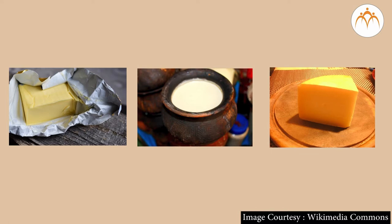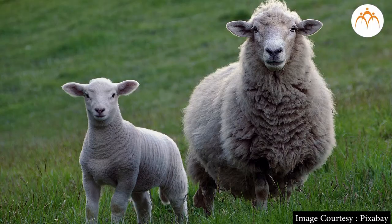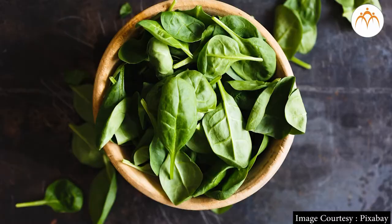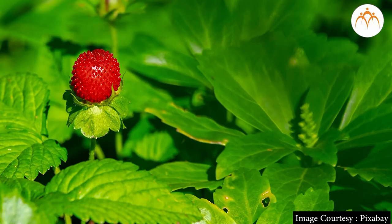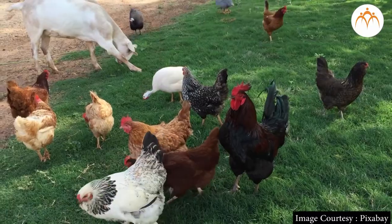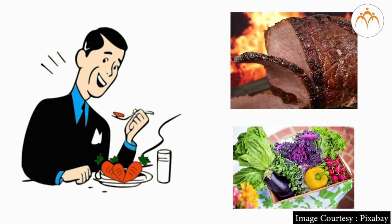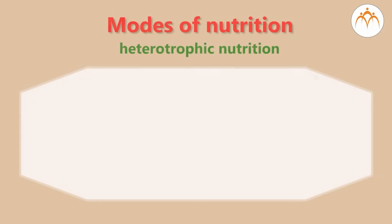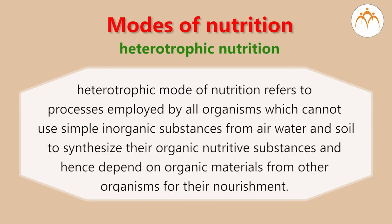Again, the answer is no. We obtain milk from animals like cows, buffaloes, sheep, goats etc. Fruits, vegetables, spices, herbs and oils we use are obtained from plants, while eggs and all meats are obtained from animals. This means that we too depend on other organisms for our nutrition and hence we are heterotrophic. In other words, heterotrophic mode of nutrition refers to processes employed by all organisms which cannot use simple inorganic substances from air, water and soil to synthesize their organic nutritive substances, and hence depend on organic materials from other organisms for their nourishment.